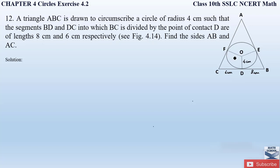We can join OF and OE, which will also be 4 cm. There are 3 external points to this circle: A, B, and C. From external point C there are 2 tangents: FC and DC. Any tangent drawn from an external point to a circle will always be equal in length, so CD = CF = 6 cm. Similarly from external point B, the two tangents BD and EB are equal, so since BD = 8 cm, EB = 8 cm as well.